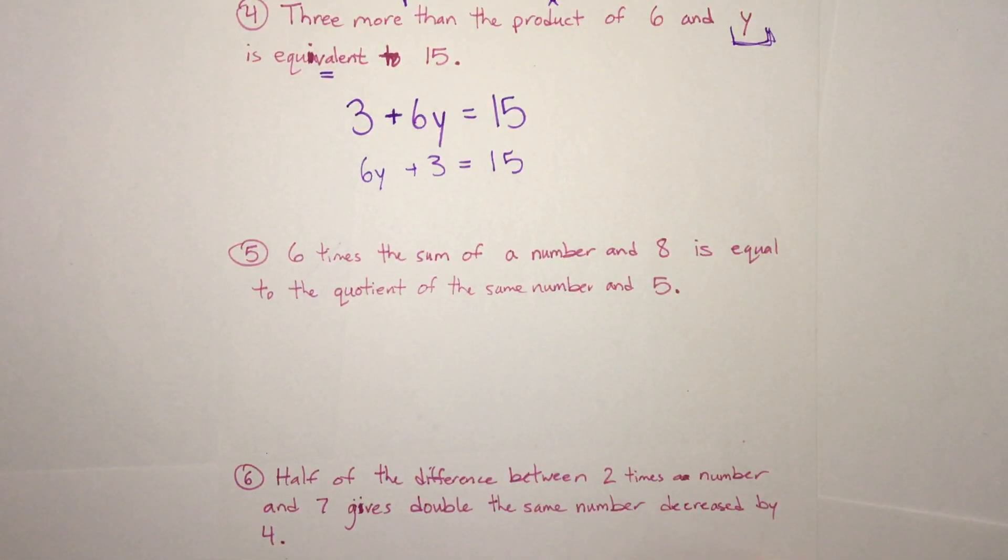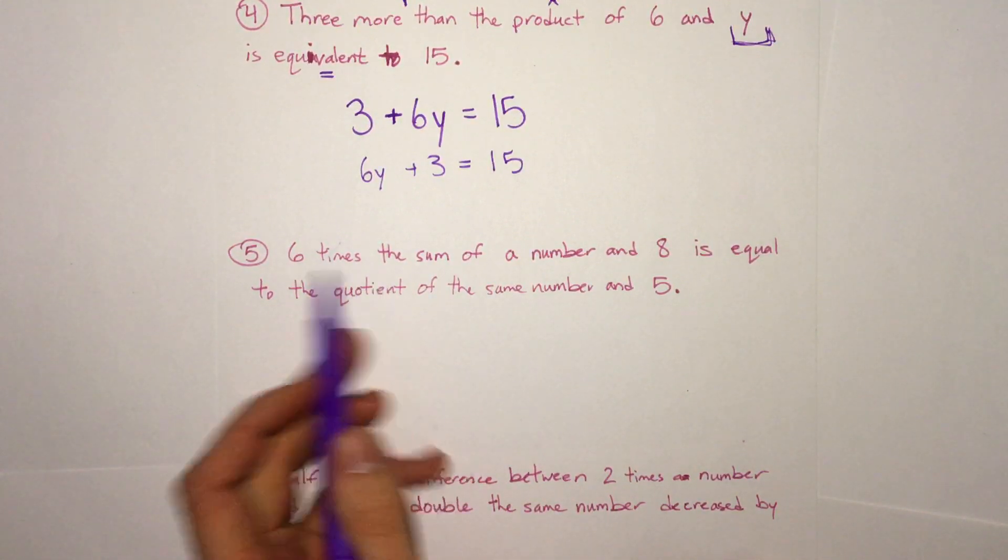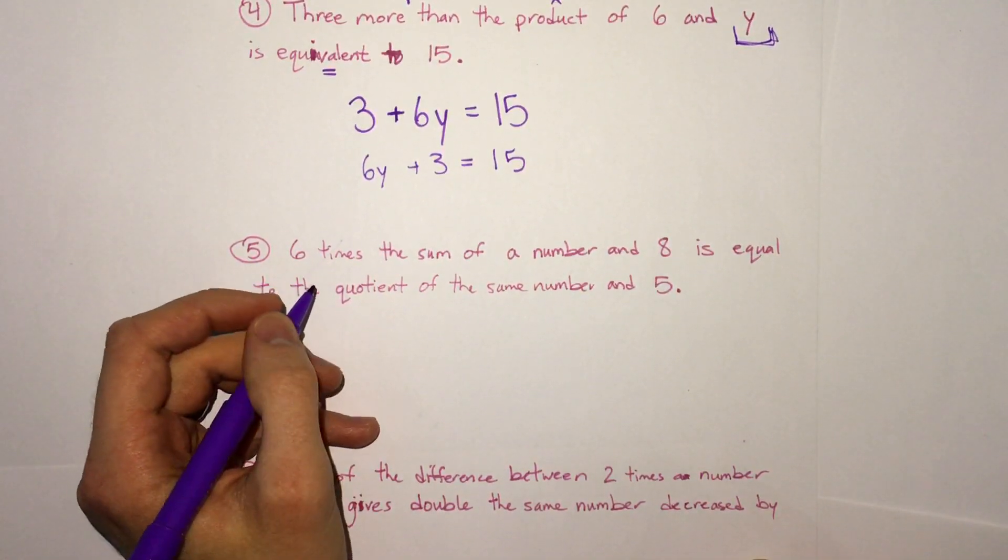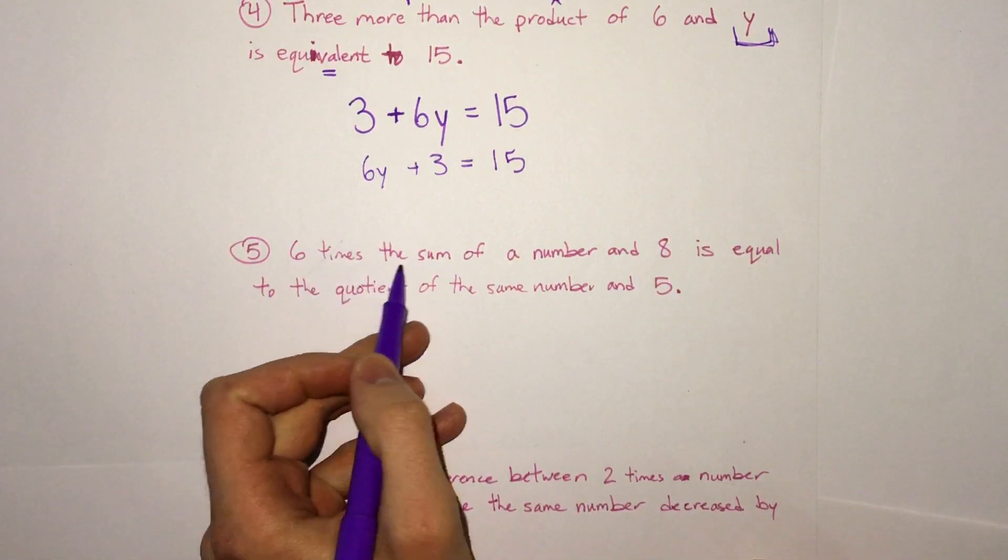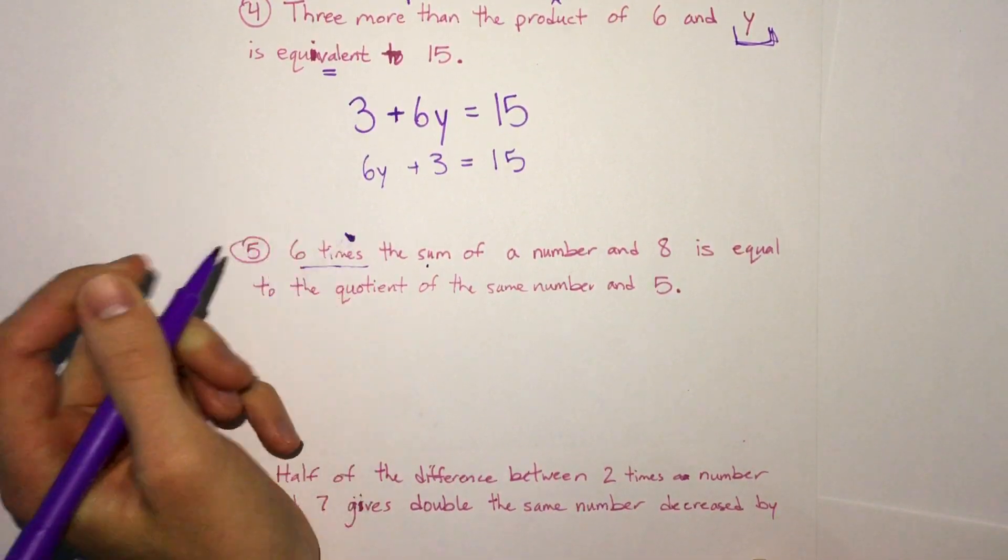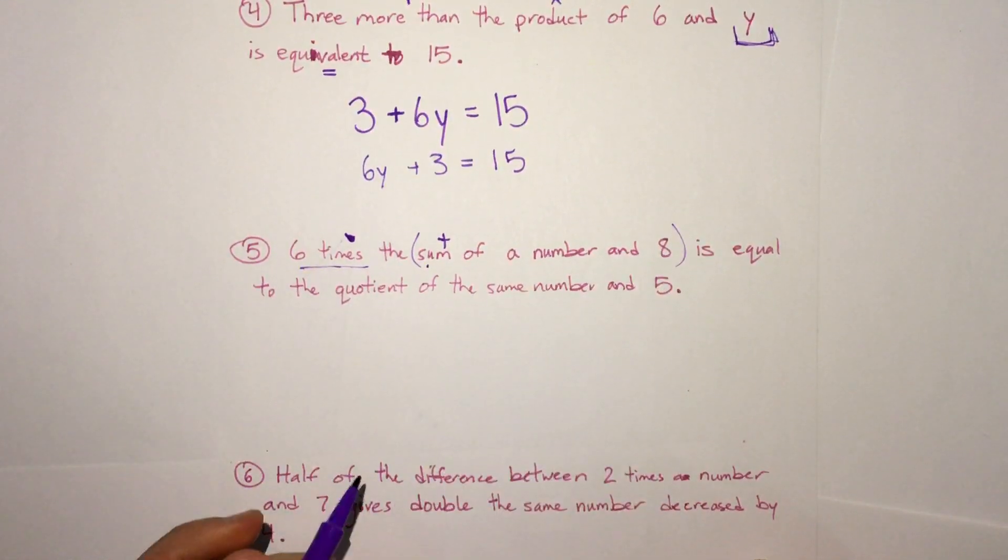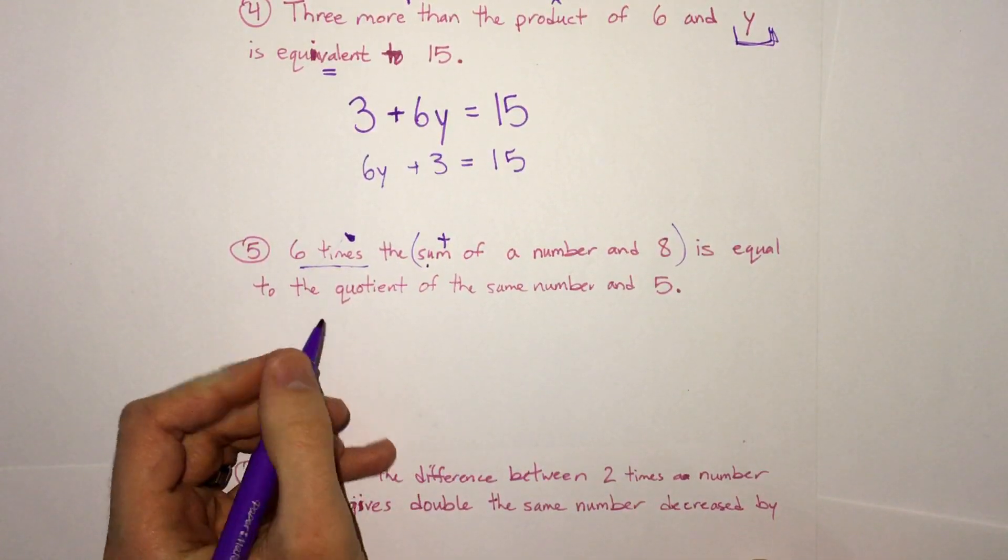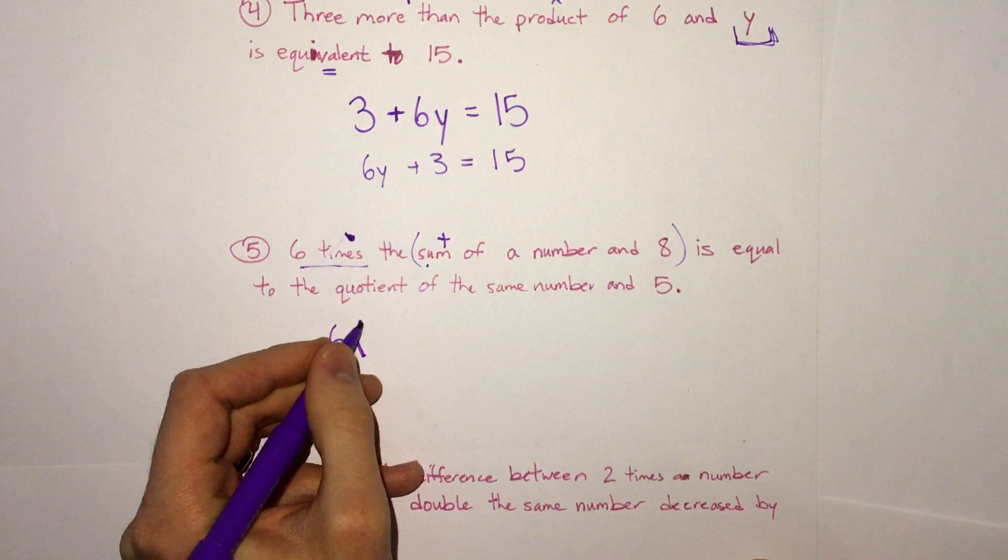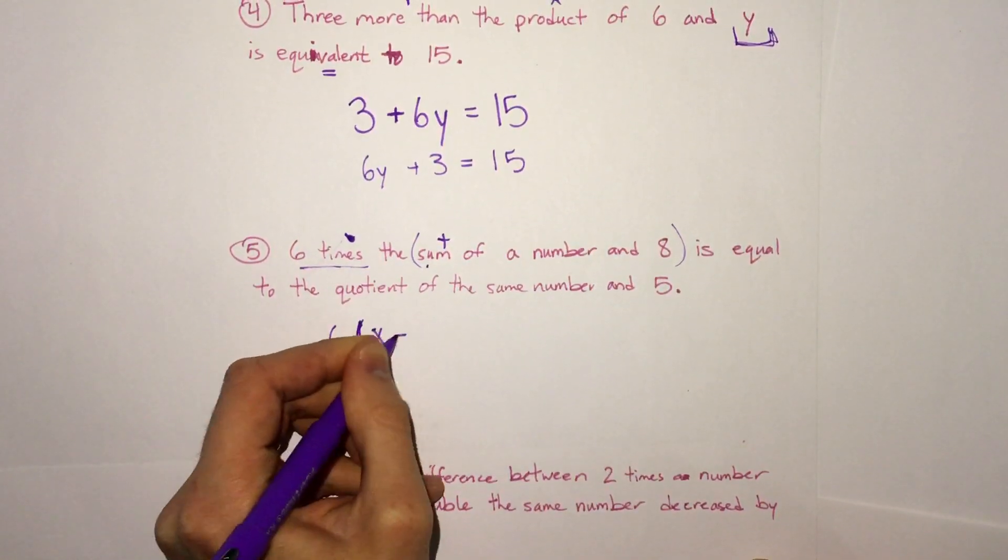Continuing on. Six times the sum of a number and eight is equal to the quotient of the same number and five. So we have a lot of things going on here. Six times the sum of, so it says six times the sum. So we're multiplying six by a sum. So we are multiplying here, but then we have the sum of a number and eight. So how we would write that, we have six times something, but it's a sum. So we'll write a parentheses here, six times x and eight, x plus eight.